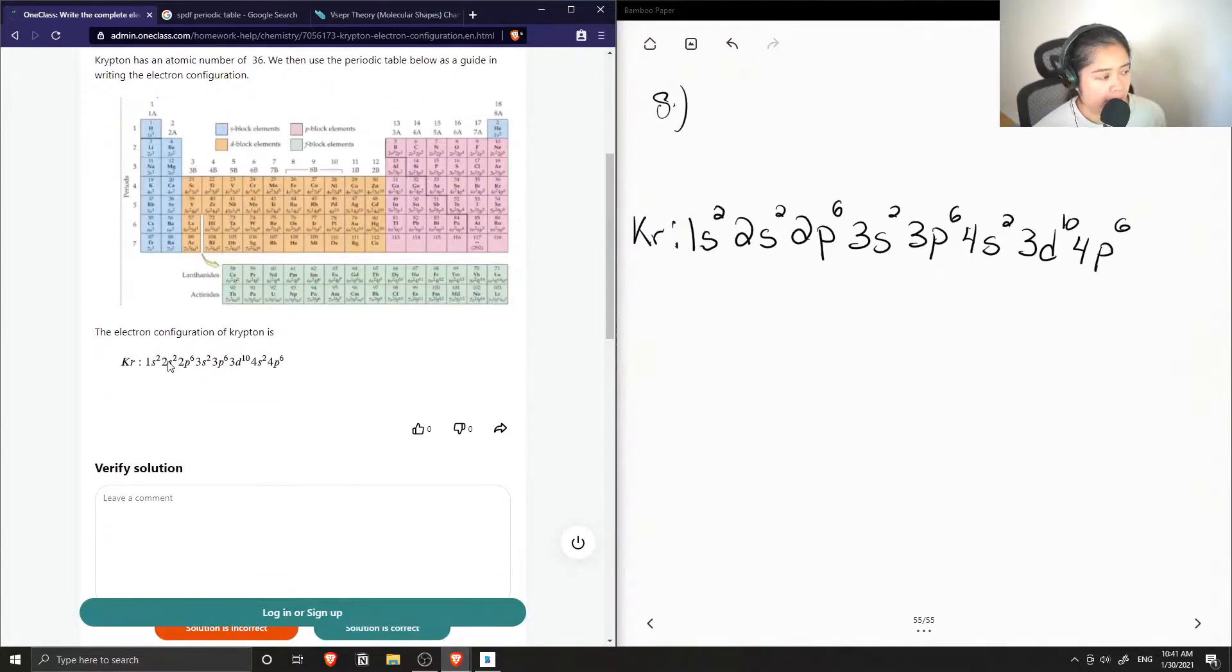But anyways, the junior tutor said electron configuration is 1s2, 2s2, 2p6, 3s2, 3p6, and they wrote 3d10 first. So this is also what I mean. It can be lower in energy than the 4s orbital, and then they wrote 4s2 and then 4p6. Okay, so this solution is correct.